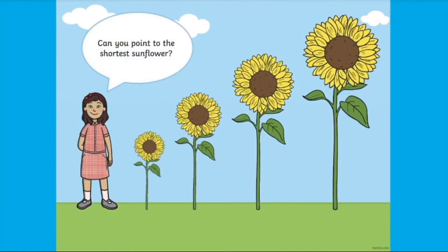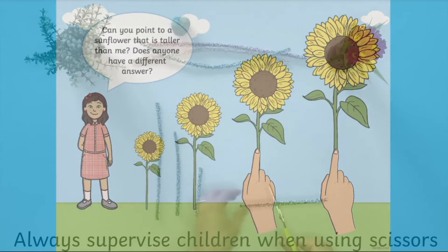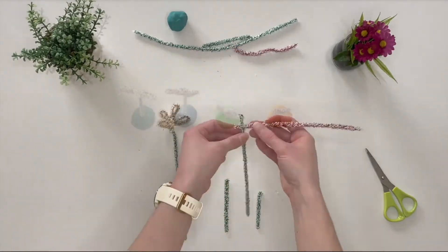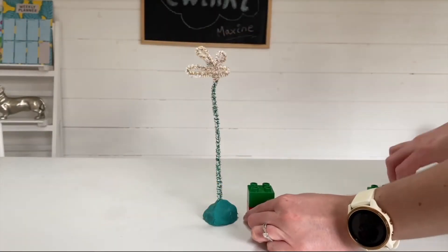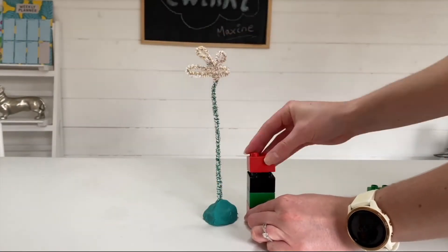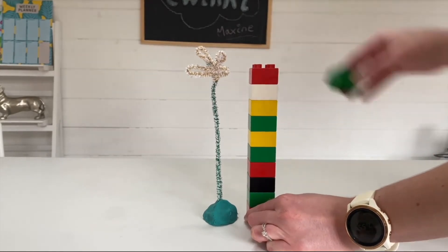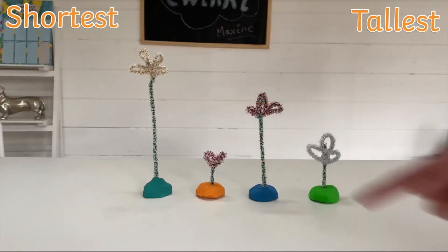Next, Maxine takes children through a lovely PowerPoint in which children are guided to compare the heights of flowers. Children can then have lots of fun making their own flowers from pipe cleaners. As children are encouraged to make flowers of all different heights, they can have a go at measuring these with building bricks and ordering them from shortest to tallest.